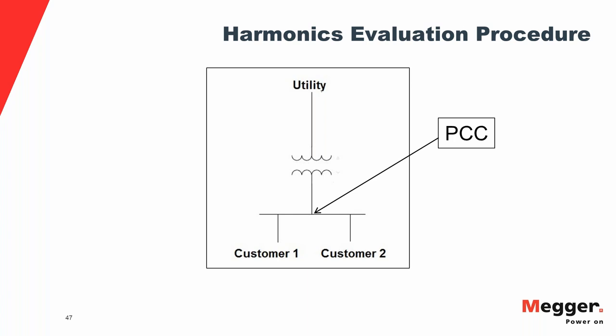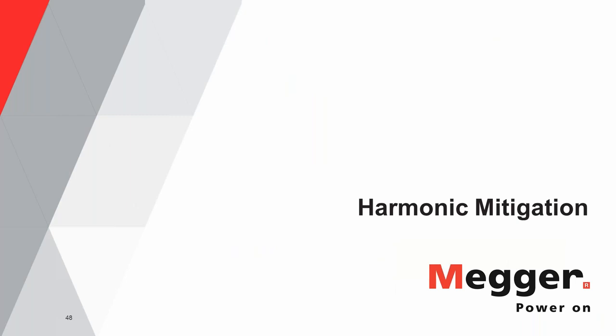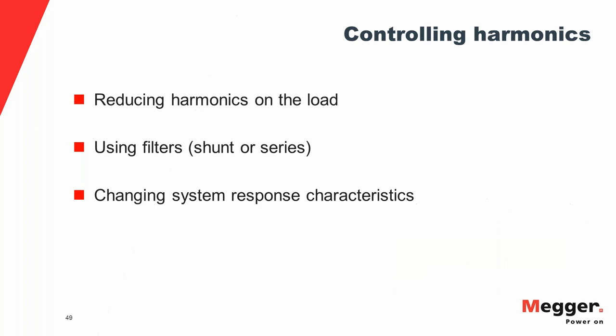Harmonic mitigation approaches include: reducing harmonics at the load itself (e.g., reducing the excitation level of an overexcited transformer); using shunt or series filters — shunt filters bypass harmonics while series filters suppress them; and changing system response characteristics, such as adjusting L and C values to avoid resonance at a particular harmonic frequency.